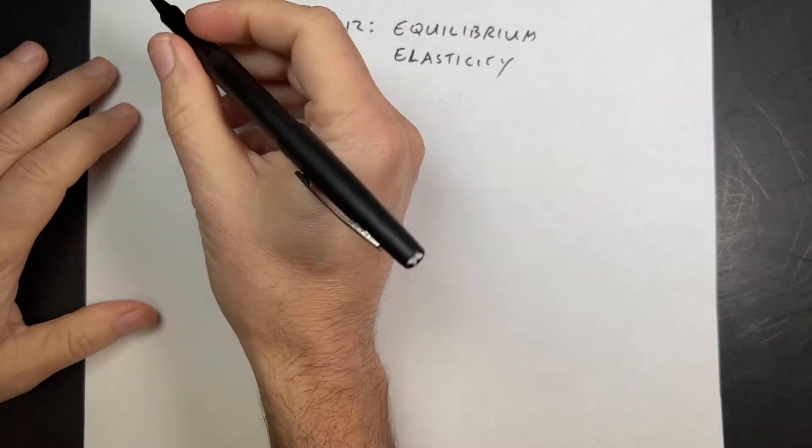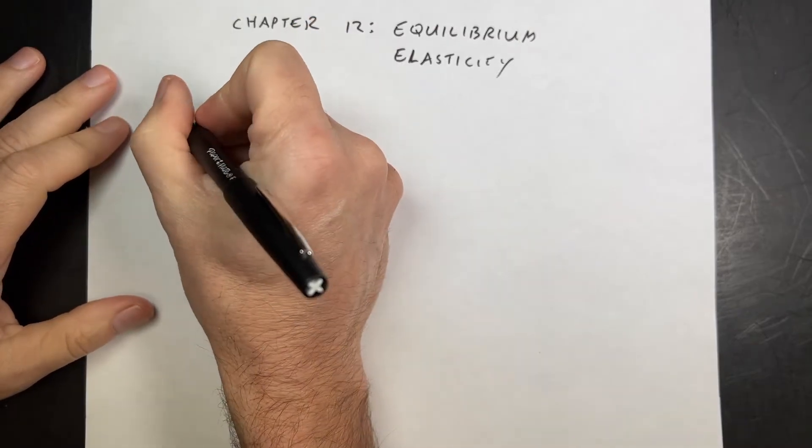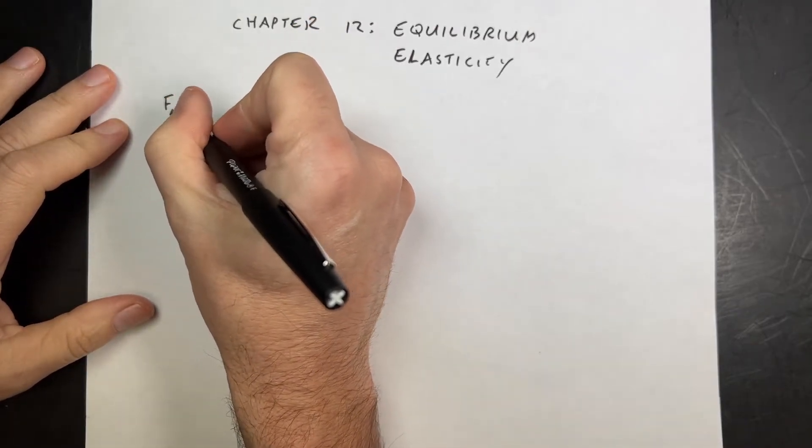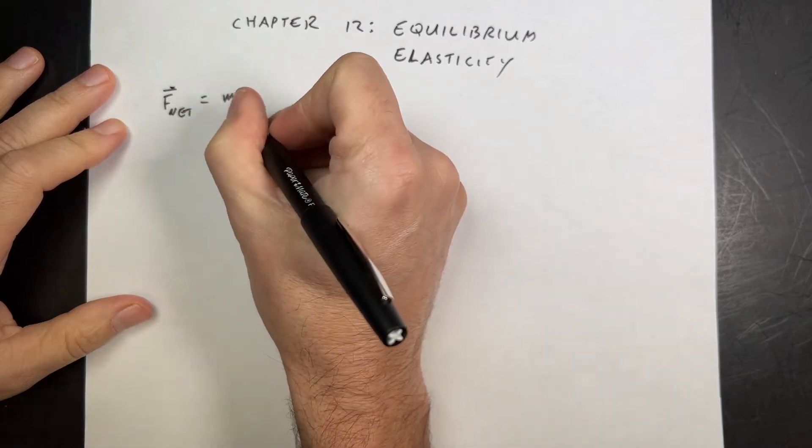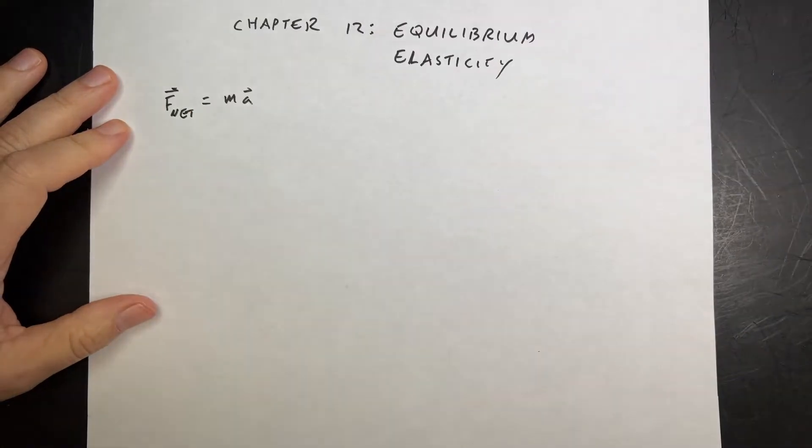So before we had the following two big ideas: Newton's second law, F net is mass times acceleration.